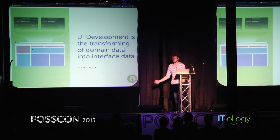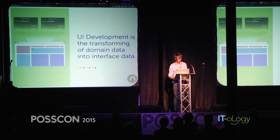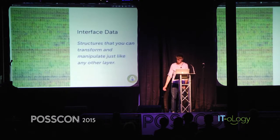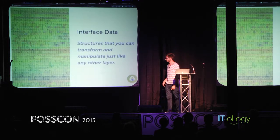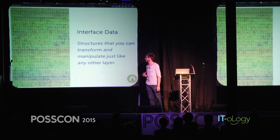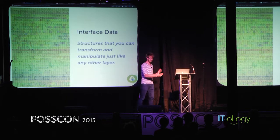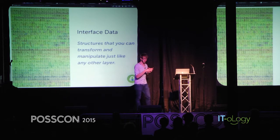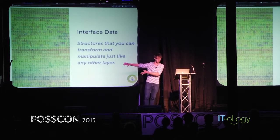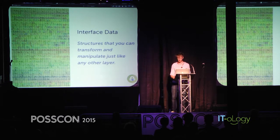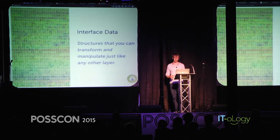Though this probably would equally apply to native iOS, Android, Windows, Web Forms, components. To define interface data: it's structures that you can transform and manipulate just like any other layer. Consider being able to actually take your HTML, CSS, JavaScript and program on those — take those as inputs and actually have them come out as outputs on the other side. So not just thinking of active record models as your data, but the interface itself.